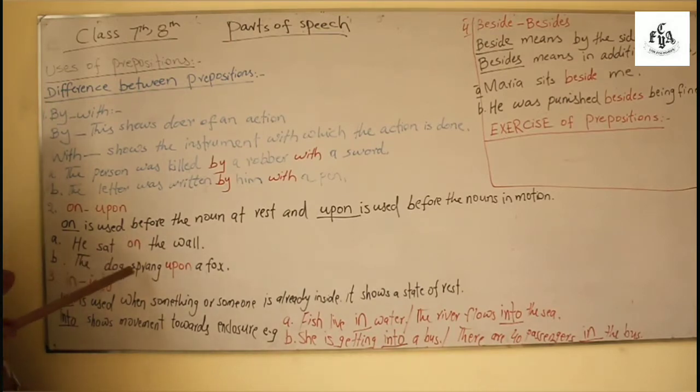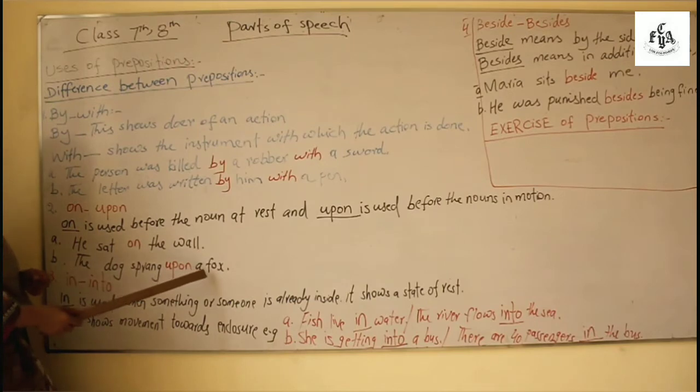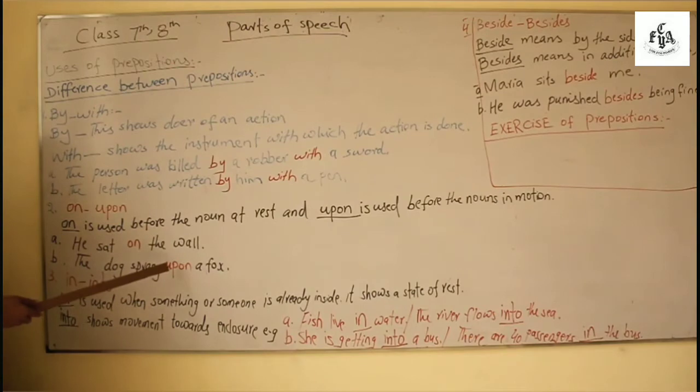Same the dog sprang upon a fox. Now it was a moving fox like running and the dog jumped over there. So upon shows before the noun in motion and on is used before the noun at rest. On is discussed already, it is used for surfaces in detail we discussed them under prepositions.